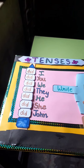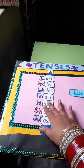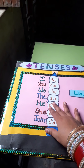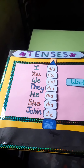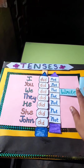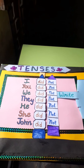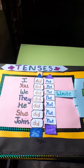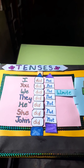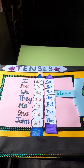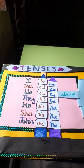If you want to make it negative, place the helping verb after the subject and add 'not.' Like this: I did not write, you did not write, we did not write, they did not write, he did not write, she did not write, John did not write.